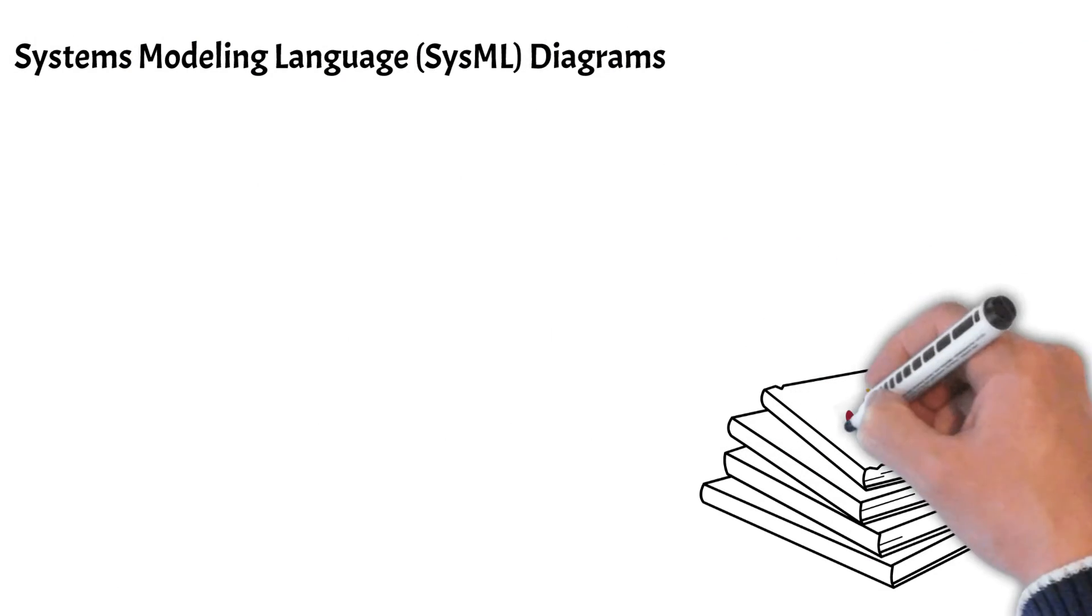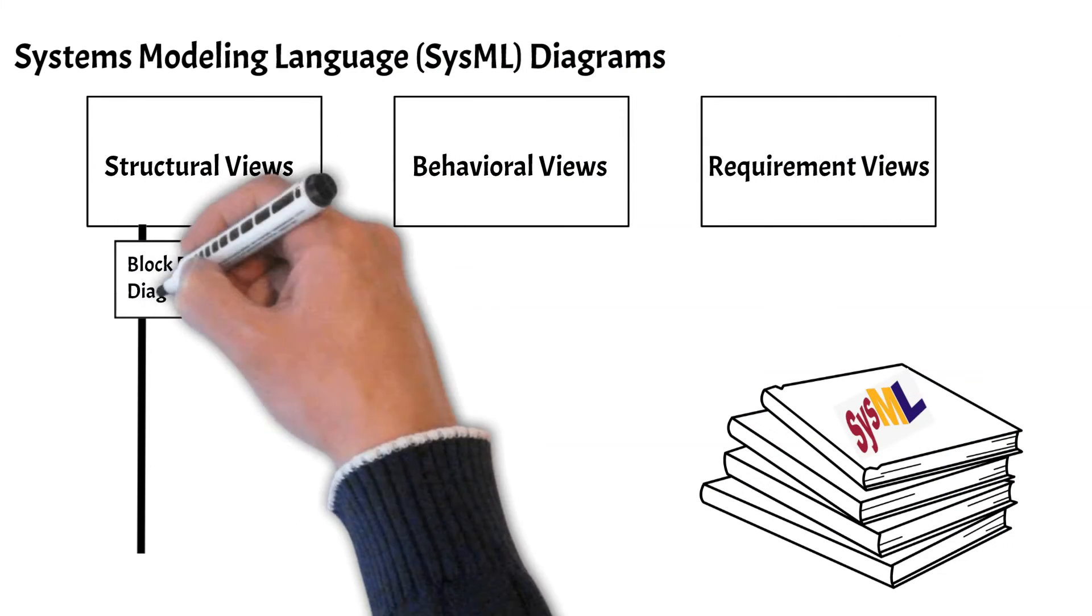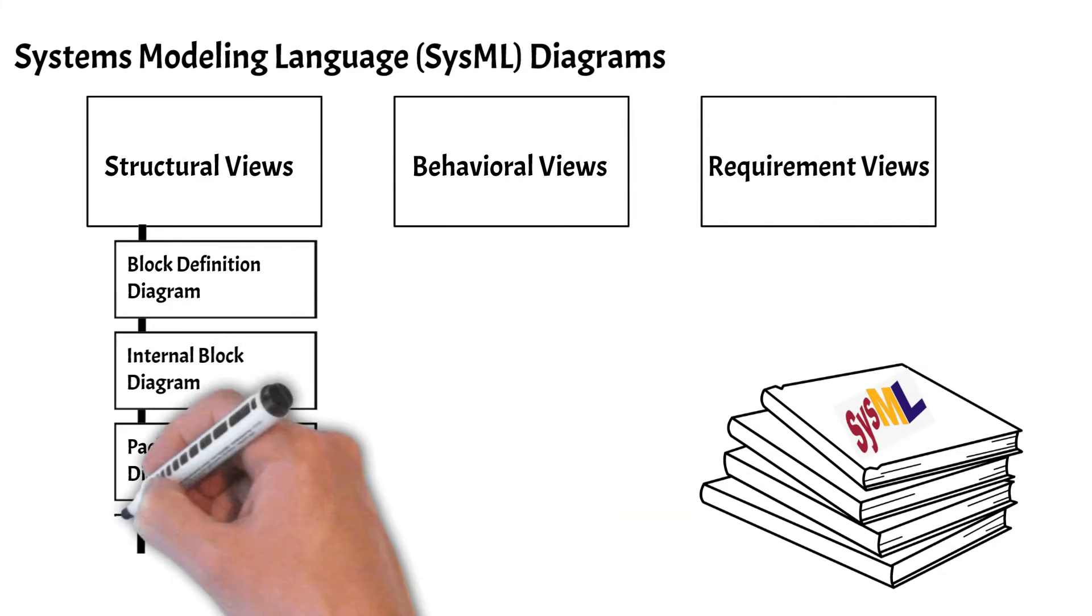Let's look at systems modeling language in more detail. SysML has structural, behavioral, and requirement diagram types. There are a total of 9 different types of SysML diagrams.